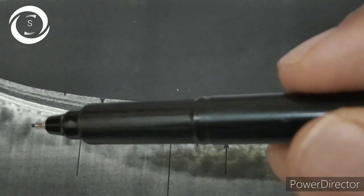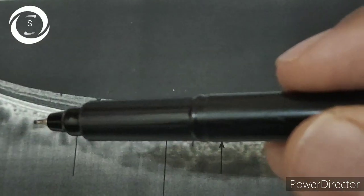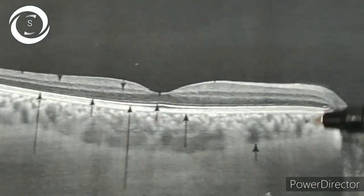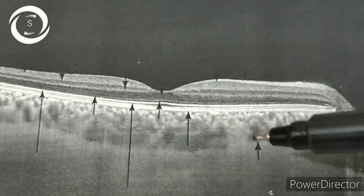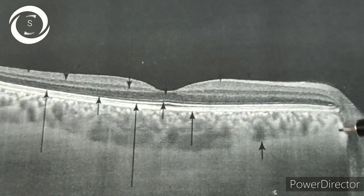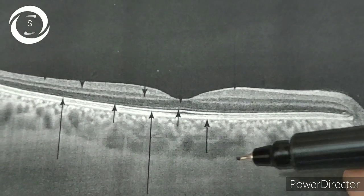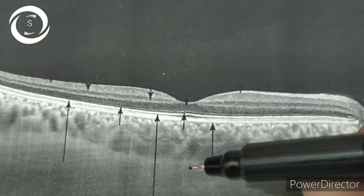Underneath these large vessels, the sclera is clearly visible. This is the sclera. So that's how a normal OCT macula looks like.